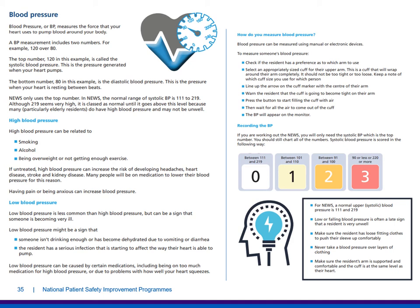Blood pressure measures the force that your heart uses to pump blood around your body. A BP measurement includes two numbers — for example, 120 over 80. The top number (120 in this example) is called the systolic blood pressure, the pressure generated when your heart pumps. The bottom number (80) is the diastolic blood pressure — the pressure when your heart is resting between beats. NEWS only uses the top number, and in NEWS the normal range of systolic BP is between 111 and 219. Although 219 seems very high, it's classed as normal until it goes above this level, because many elderly residents do have high blood pressure and may not be unwell. High blood pressure can be related to smoking, alcohol, being overweight or not getting enough exercise, and can increase the risk of developing headaches, heart disease, stroke and kidney disease.